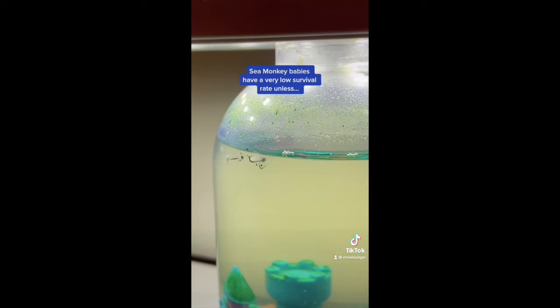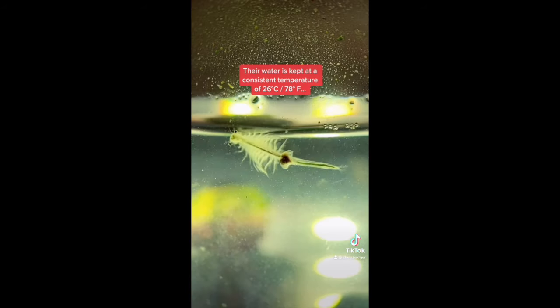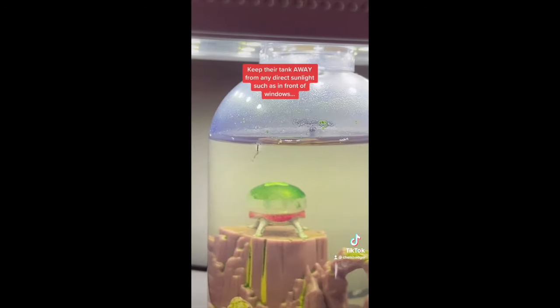If you've had lots of sea monkeys hatch but then the next day they've disappeared, this means that they've died. However, this is completely normal because sea monkey babies have a very low survival rate unless their water is kept at a consistent temperature of 26 degrees Celsius.